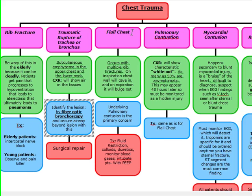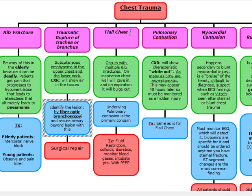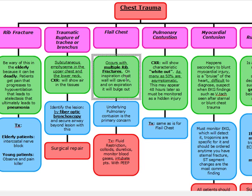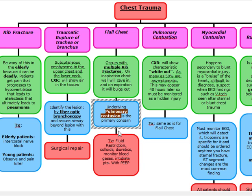Flail chest is a high-yield topic on the exam. It occurs with multiple rib fractures, and you get something called paradoxical breathing. On inspiration, the chest wall is actually going to cave in, and on expiration it's going to bulge out — that's paradoxical breathing. What we have to remember in flail chest is that our underlying problem is actually the pulmonary contusion that occurs. The contused lung is very sensitive to fluid overload.